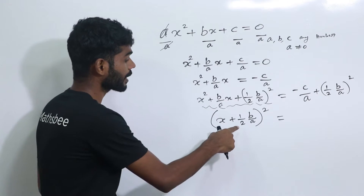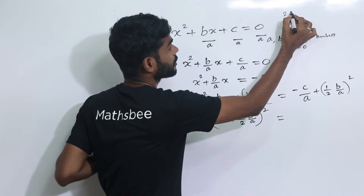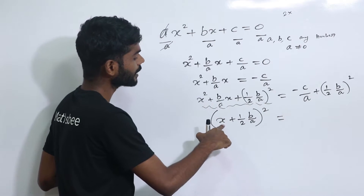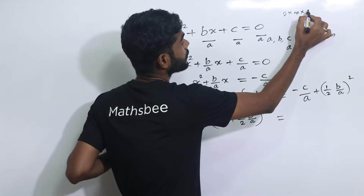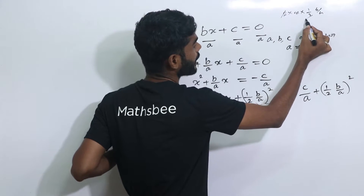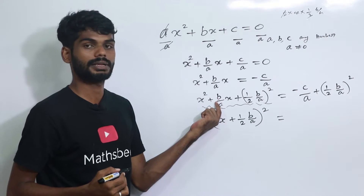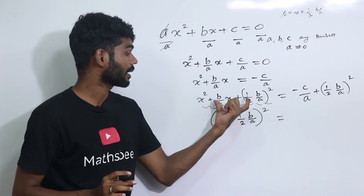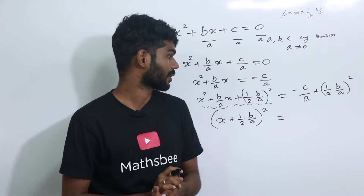So 2ab gives x into b by a, confirming the total term x plus half of b by a, all squared. On the remaining right hand side, we simplify: that is negative c by a, plus one-quarter times b squared by a squared, which is b squared by 4a squared.